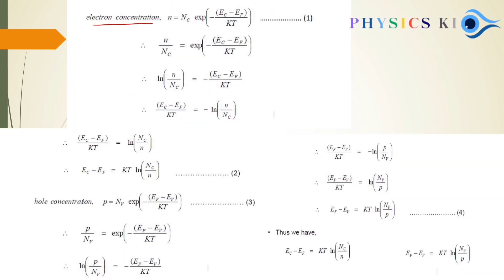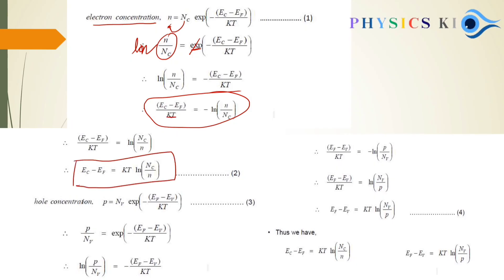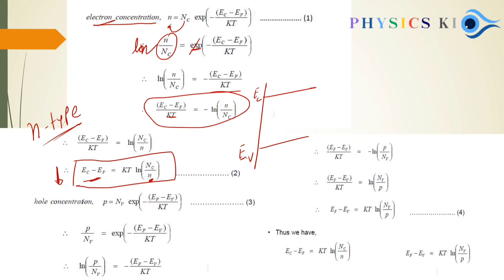For electron concentration (N-type): starting from the electron concentration equation, divide by NC and take ln both sides. This gives EC − EF = KT × ln(NC/N). If electron concentration N is large, then EC − EF is small, meaning EF is close to EC. So for N-type material, the Fermi level is near the conduction band.